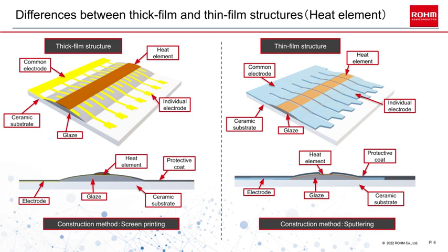The advantages of the thick film structure are high productivity due to the screen printing method, good printing efficiency, energy savings, high durability, and high resistance to ionic corrosion. The thin film structure is produced by sputtering a heating element onto the surface. The advantage is the thin heat element that can provide high resolution printing, and excellent thermal response makes it better suited for high speed printing.